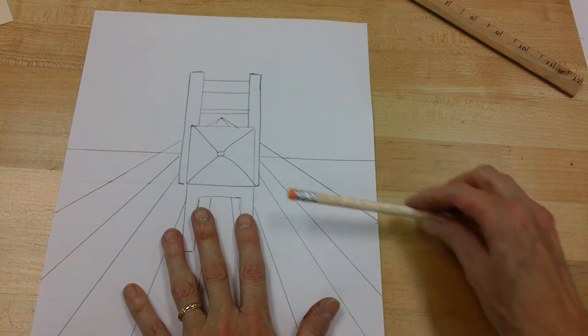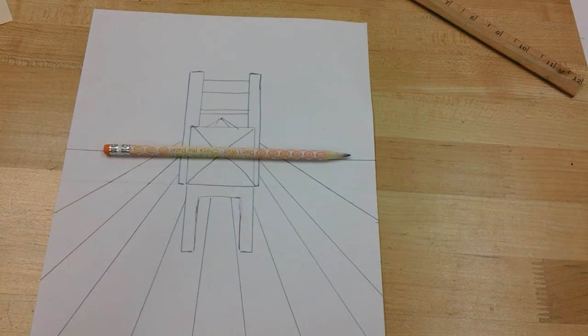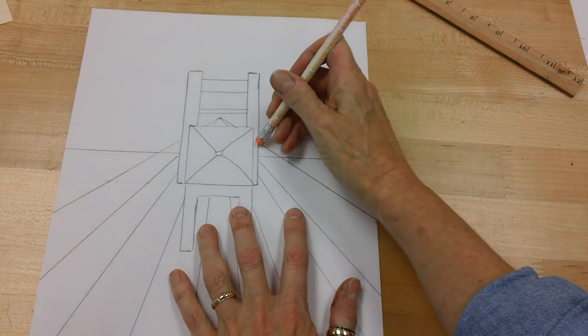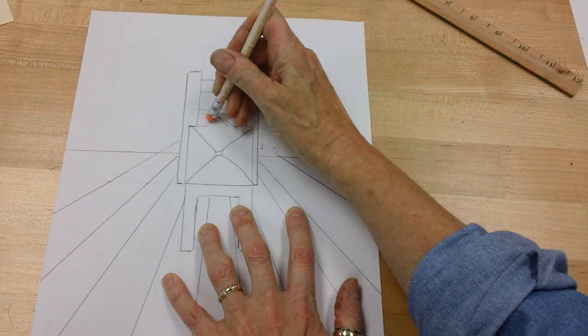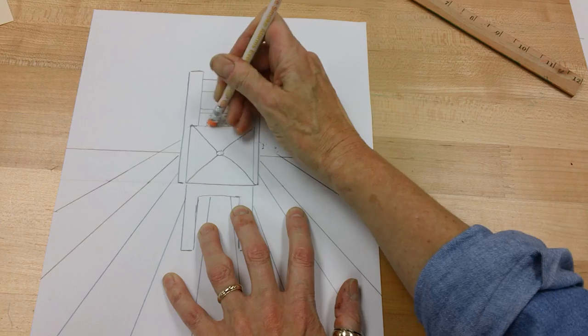Now it's starting to look like the floor in the background. Okay, I can erase these lines now because they have already helped me enough.